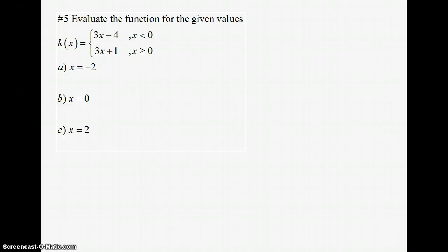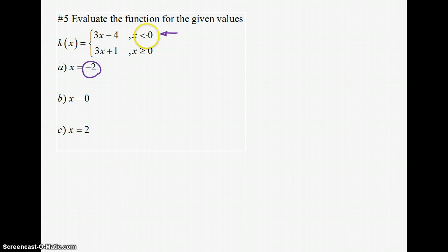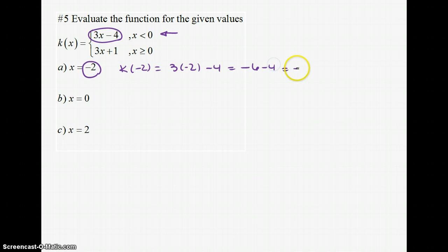Now we evaluate piecewise functions. This piecewise function has two pieces with restricted domains: the first piece applies when x < 0, and the second when x ≥ 0. For x = −2, since −2 is less than 0, we plug into the first piece: k(−2) = 3(−2) − 4 = −6 − 4 = −10.